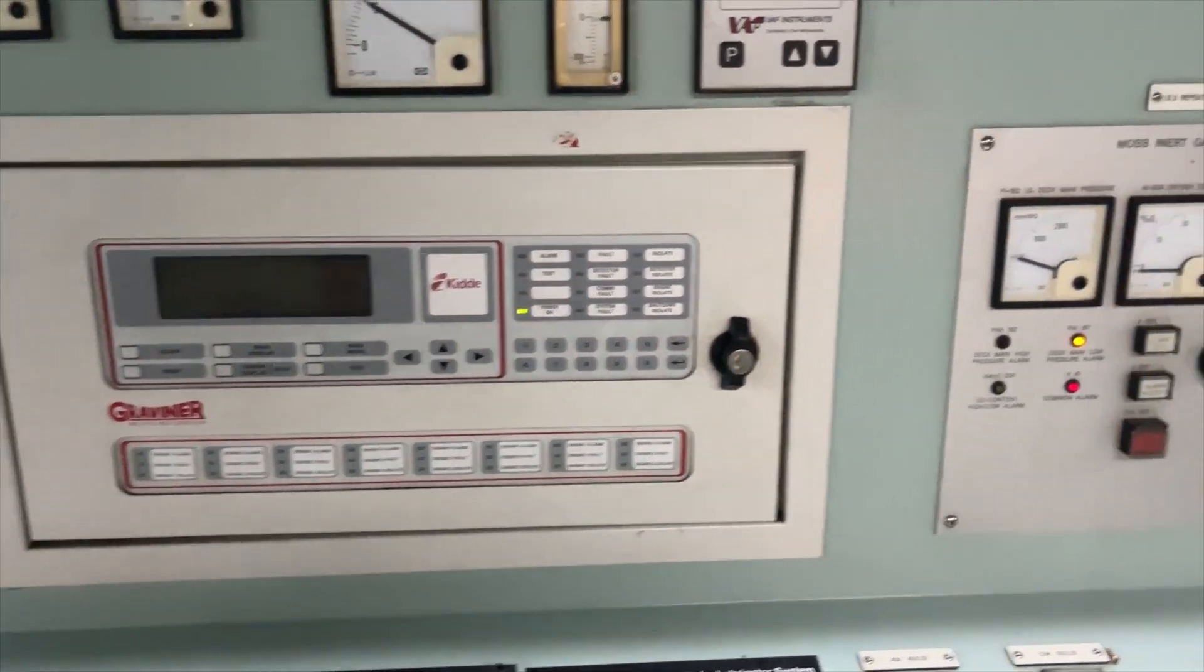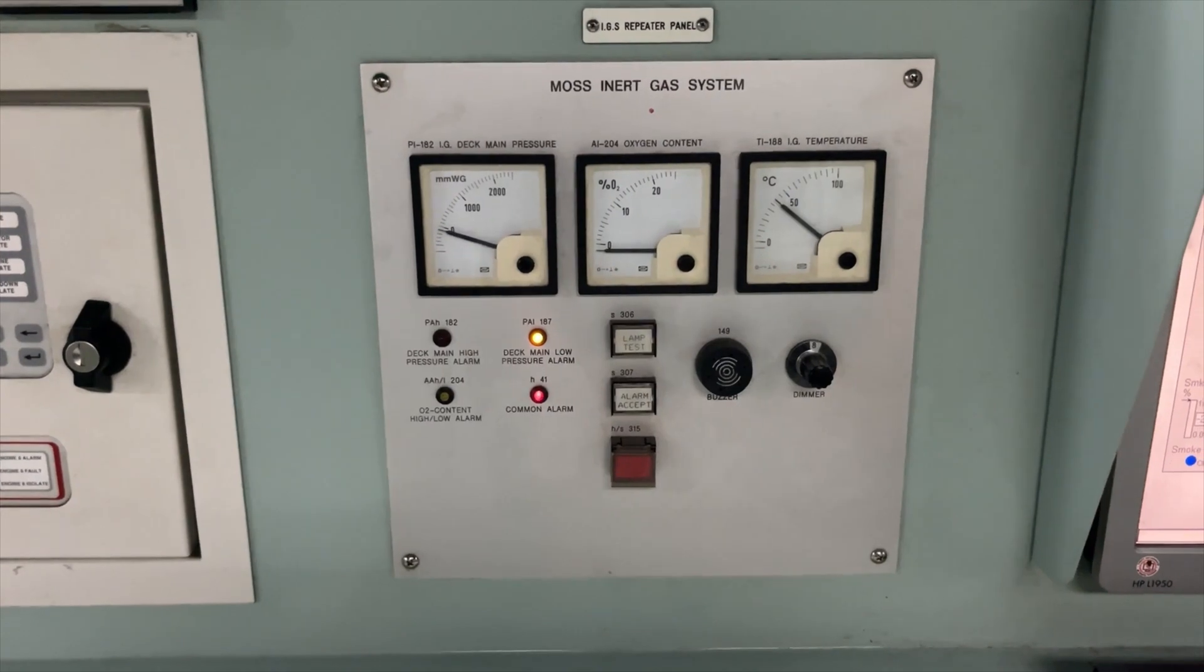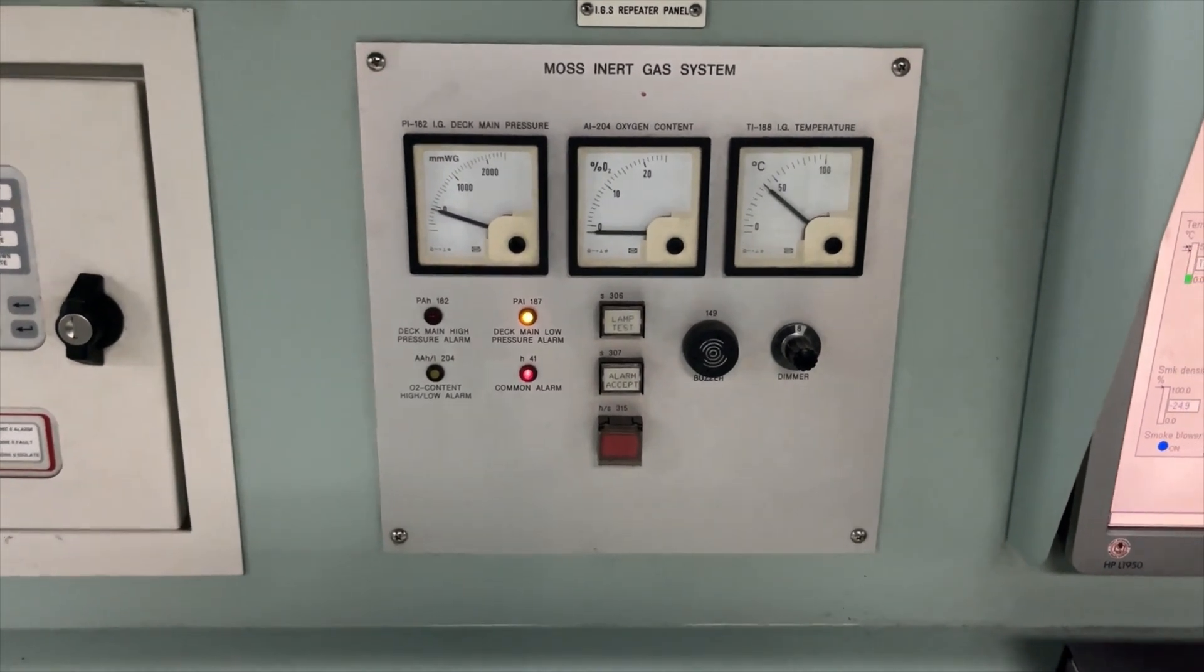Oil Mist Detector. And this is your inert gas system repeater. The main unit is in the CCR.